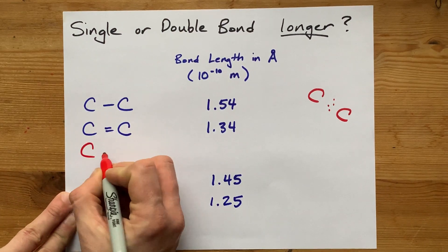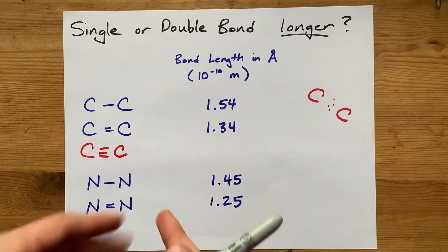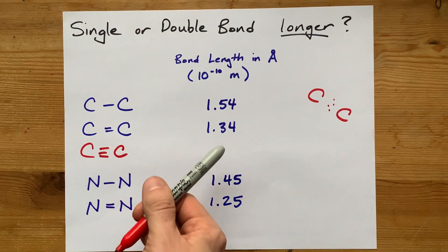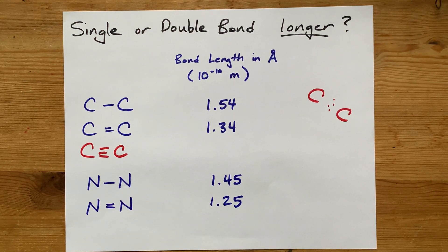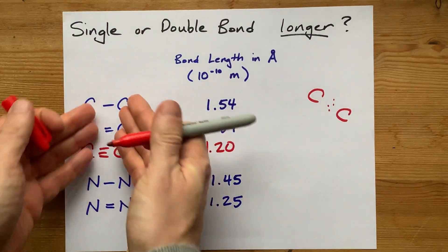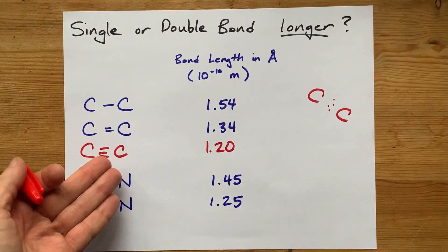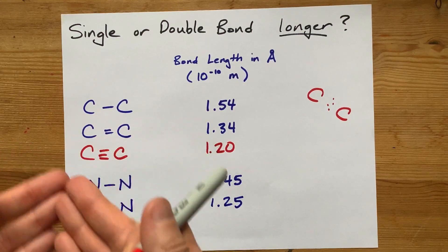You can probably guess that if you had six particles of glue holding the two positive nuclei together, it would be even shorter. And you'd be right. I'm looking at a chart off screen here. A triple bond looks to me to be about 1.20, even shorter, because you have more negatively charged electrons between the two nuclei, which can hold them closer together.